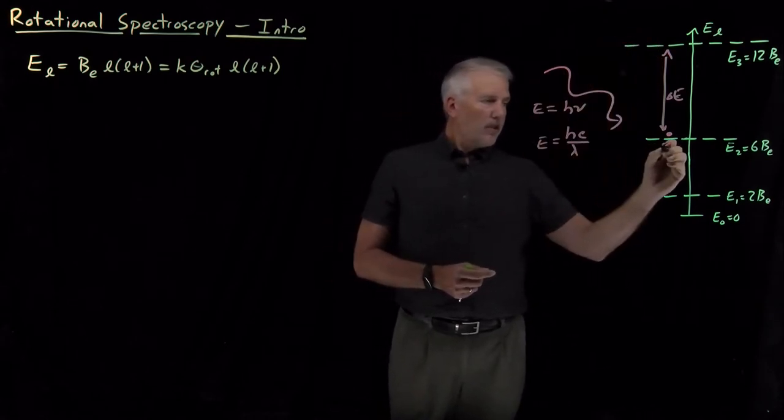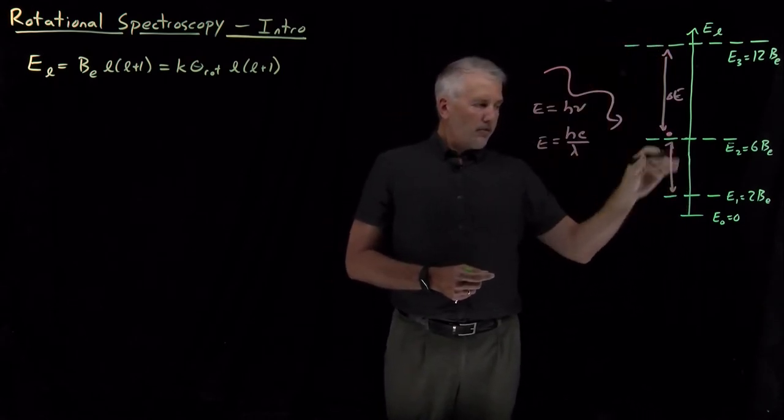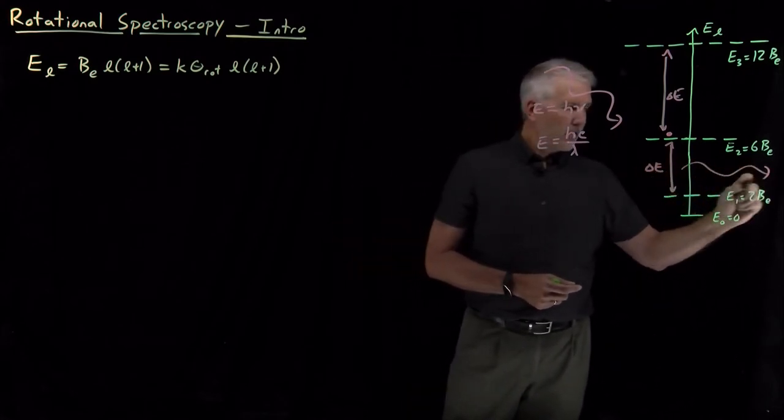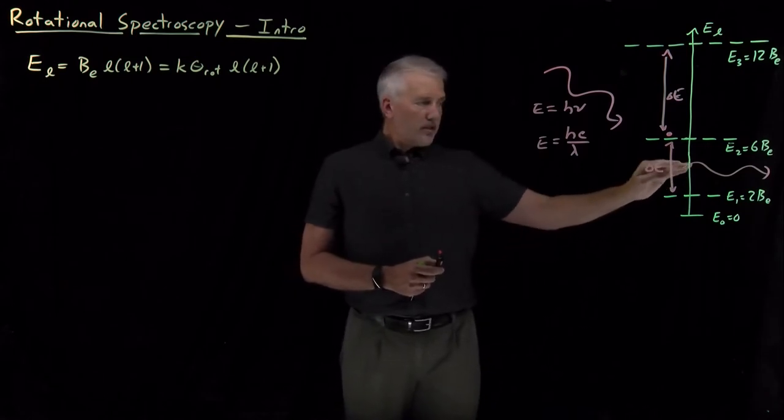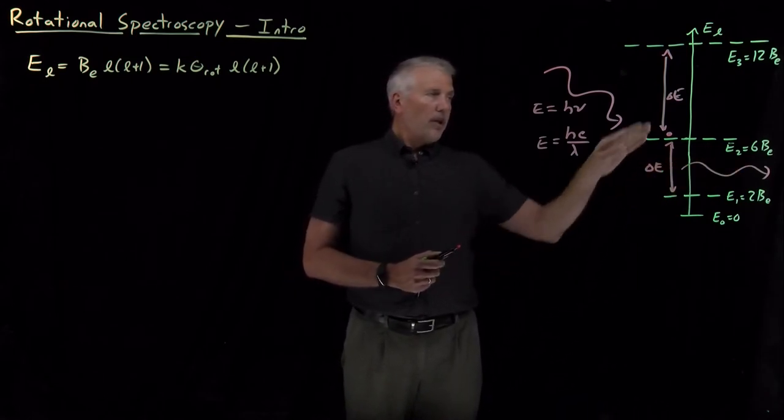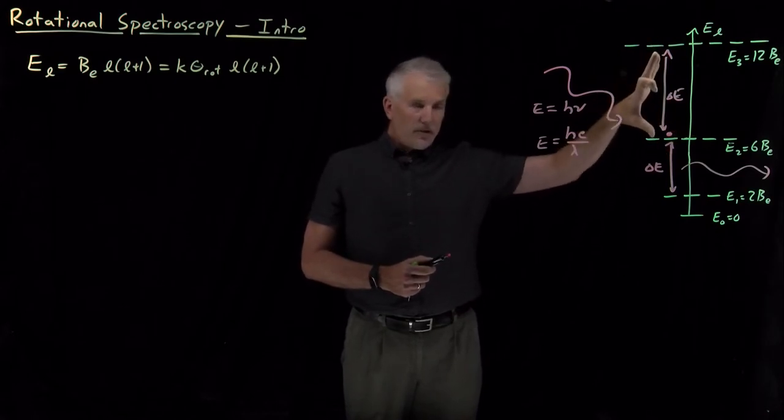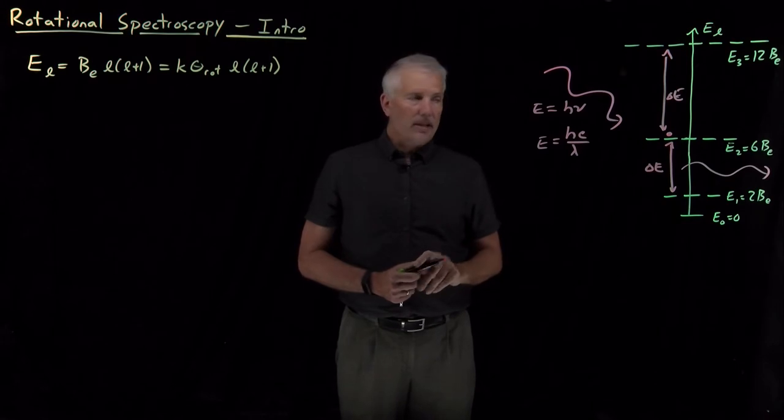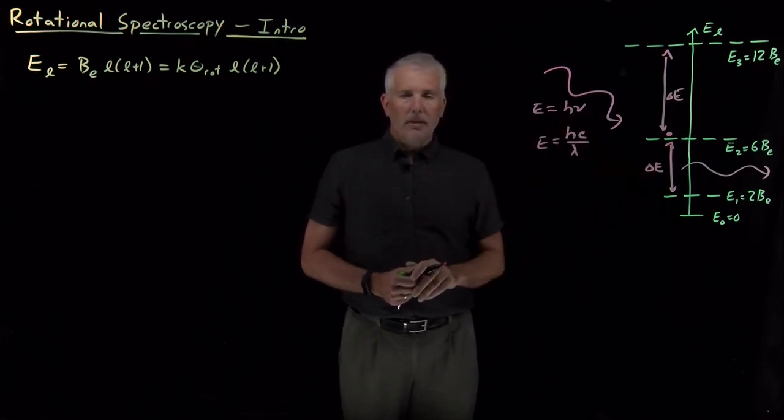Alternatively, the molecule can fall down to a lower energy level, and in this case it would give off a photon with its own different frequency or wavelength. So now that we know the energies, we can calculate the differences between the states, and those differences tell us something about the types of light that can be either absorbed or emitted by molecules that behave as rigid rotors.